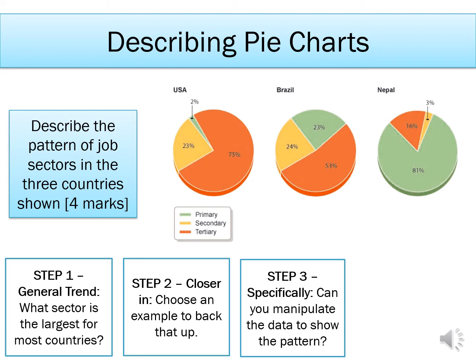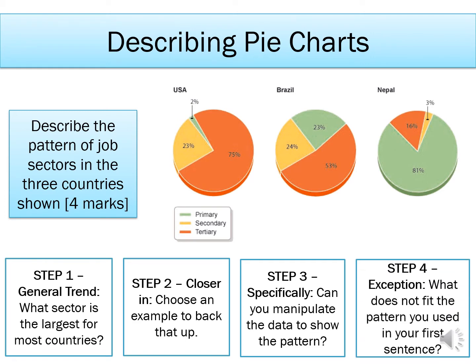For example, you might say that for the USA their biggest sector is 52% larger than their next biggest sector — that's the difference between their tertiary and secondary sector. And finally, the E is for the exception — so what doesn't fit the pattern. For example, if your general trend was that the largest sector seems to be tertiary jobs, is there a country shown in these pie charts where the largest sector is actually something different?